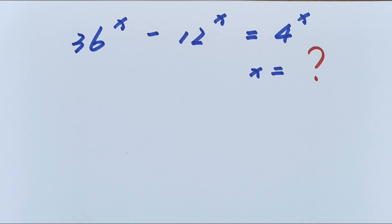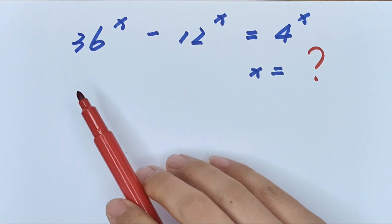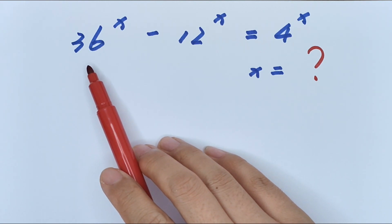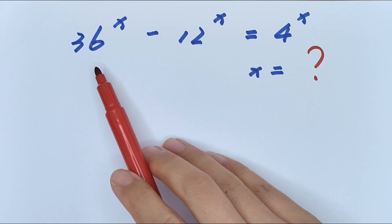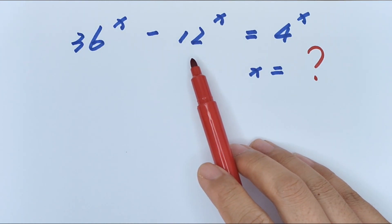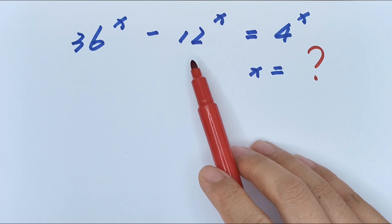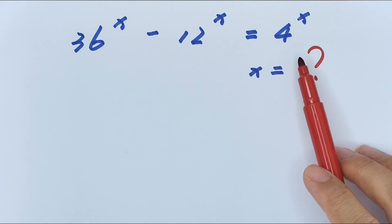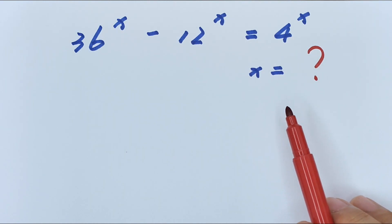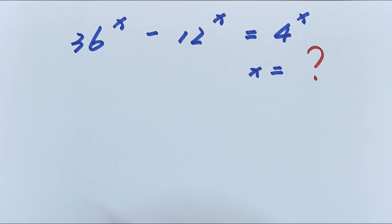Hello everyone, welcome to Math4U. How to solve 13·6 to the power of x minus 12 to the power of x equals 4 to the power of x, to find the value of x.